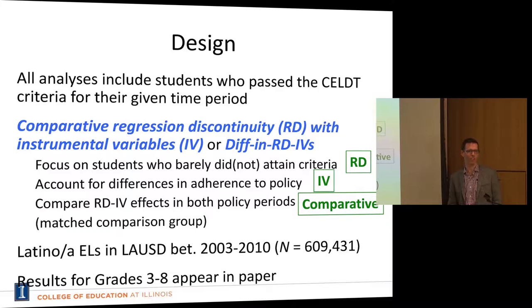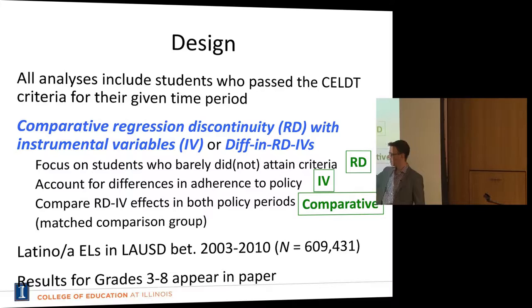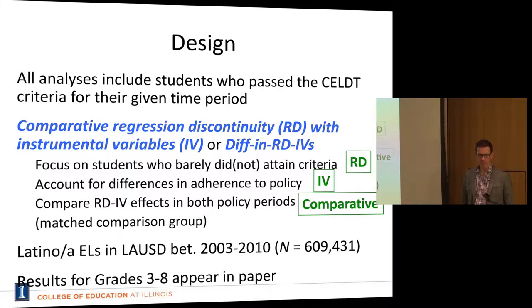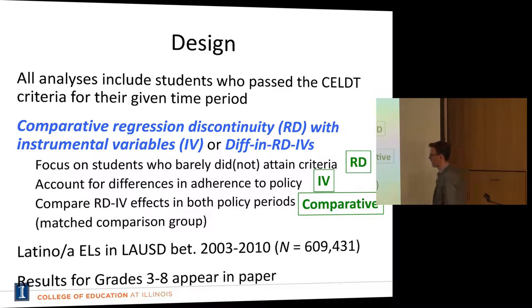The analyses are limited to Latino/Latina English learners in LAUSD, who make up over 95% of English learners there. We have data from academic year 2002-03 to 2009-10 — over 600,000 students. I'm going to focus on the effects for high school; the results for grades 3 to 8 are in the paper but are not particularly interesting.